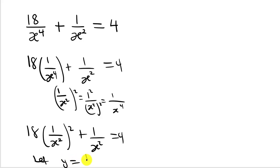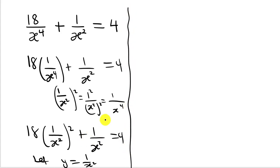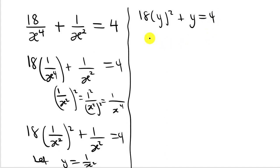We let y equal 1 over x squared. So wherever we see 1 over x squared, we substitute y. That leads us to 18 multiplying y squared, plus y, equal to 4, which becomes 18y squared plus y minus 4 equals 0. Now we have a standard quadratic equation.